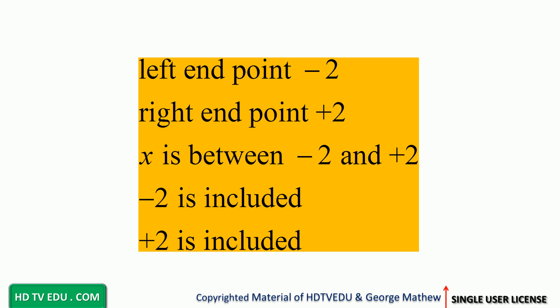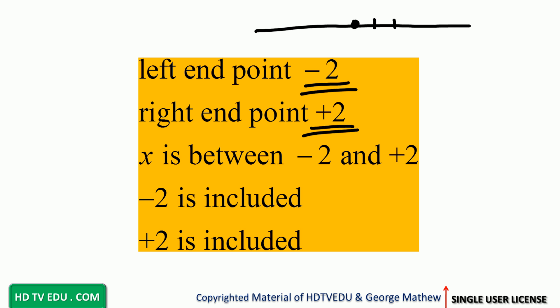What is the left endpoint? Negative two. What is the right endpoint? Positive two. Here is our number line, here is our origin: positive one, positive two, negative one, and negative two. We have a square bracket here on the left and a square bracket here on the right, so negative two is the left endpoint.